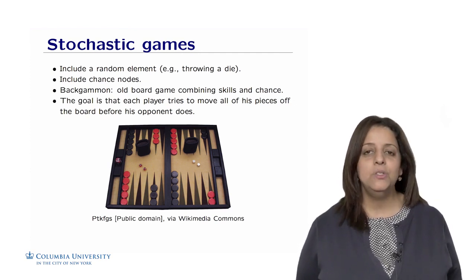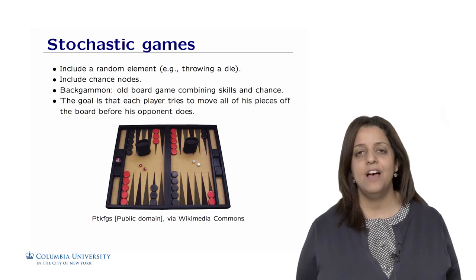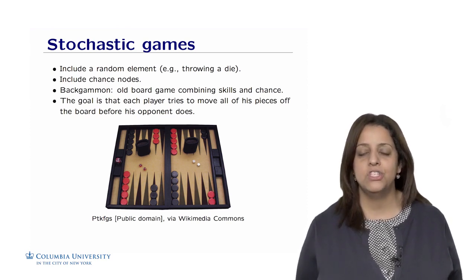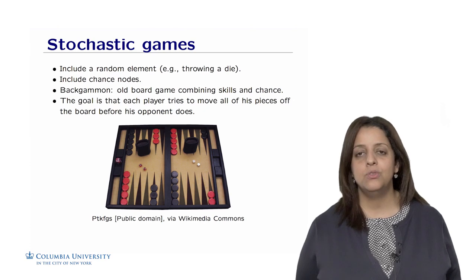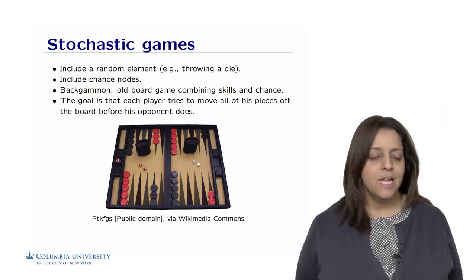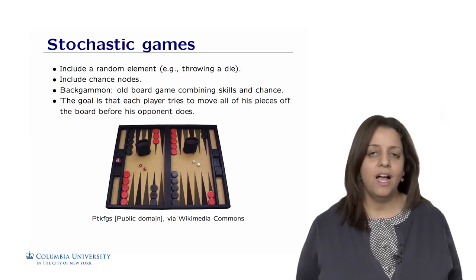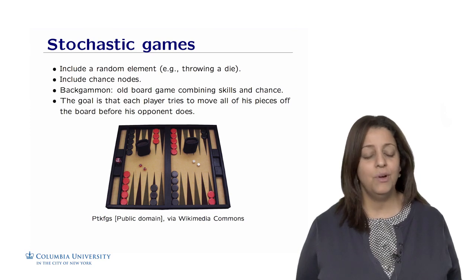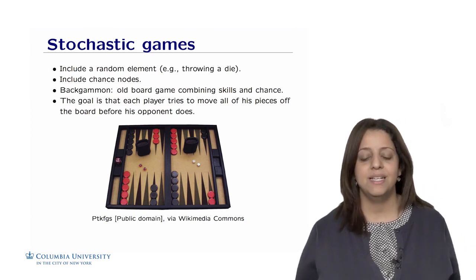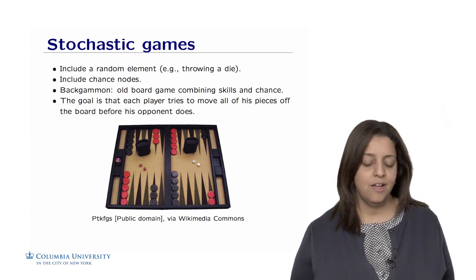So this is going to include the chance node in the search. We don't have only max and min anymore. We also have nodes for chance to occur between the two players. An example of a game is backgammon, one of the oldest board games combining skills and chance of the players.